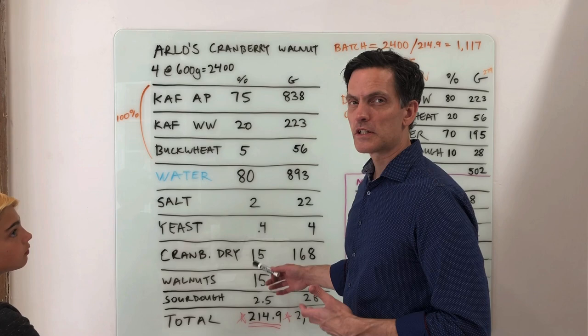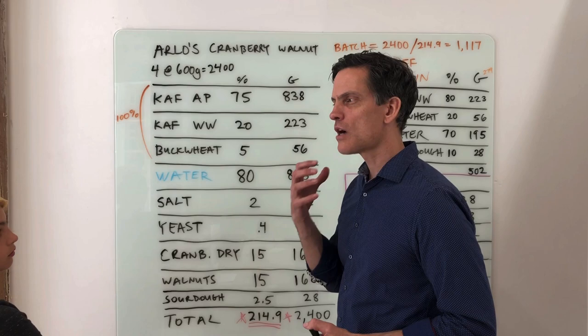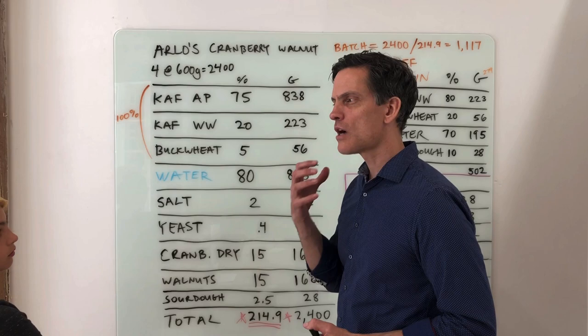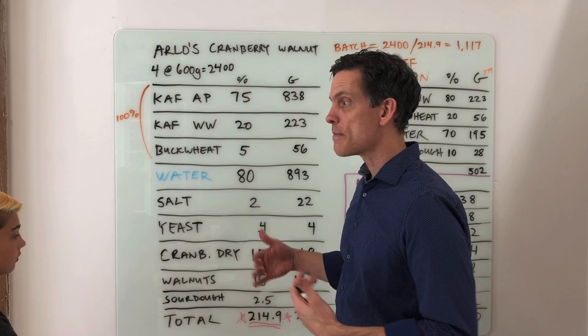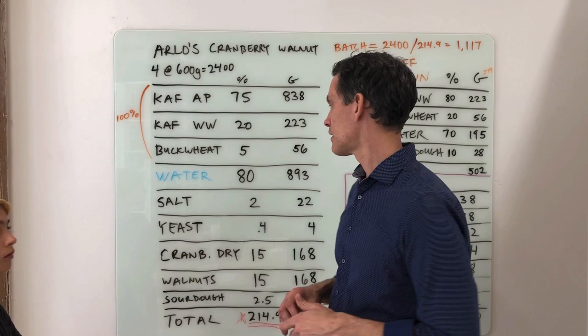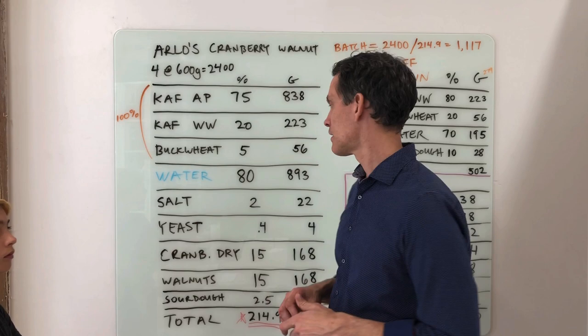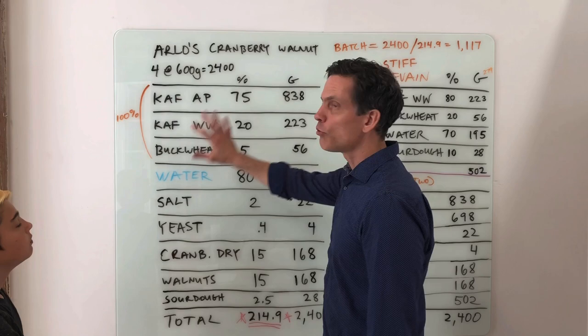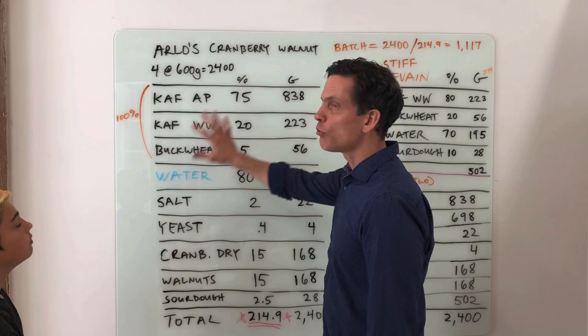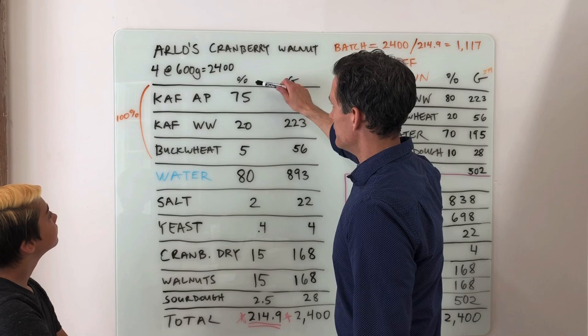Cranberries and walnuts — these are pretty much to taste. At 30% total, you should have some cranberry and walnut in pretty much every bite without it being densely packed. When we make and taste the bread, we'll decide if we should go up or adjust the ratio. Also listed is a little sourdough — we're going to use a stiff levain as a pre-ferment. Reminder: this total formula is the sum of all parts — everything that will go into this batch.